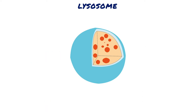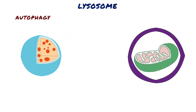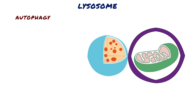Lysosomes also use their hydrolytic enzymes to recycle the cell's own organic material, a process called autophagy. During autophagy, a damaged organelle or small amount of cytosol becomes surrounded by a double membrane, and a lysosome fuses with the outer membrane of this vesicle.